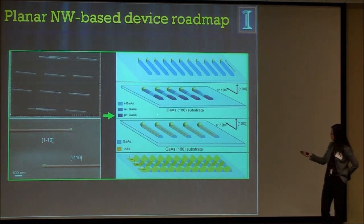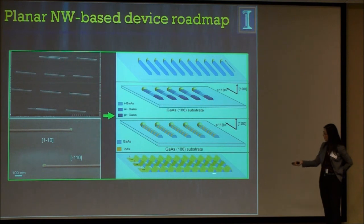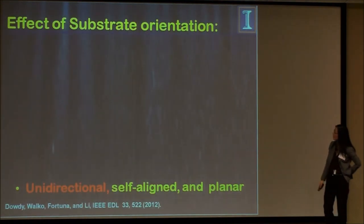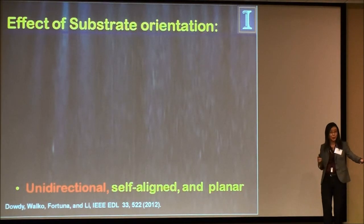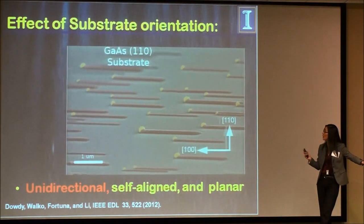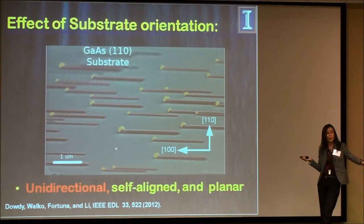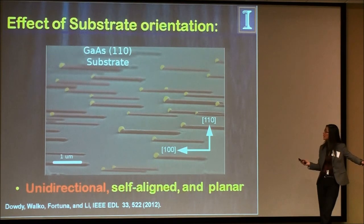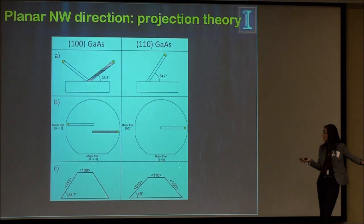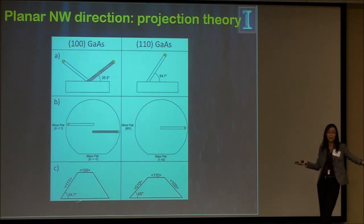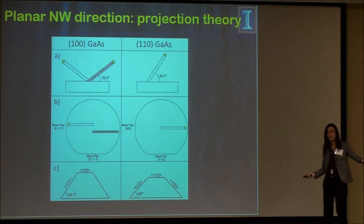Here's our roadmap. The first challenge is: can we do array-based transistors? If we go to a 110 substrate instead of 100, it turns out all the wires propagate in the same direction. We are able to realize unidirectional self-aligned planar wires. On a 100 substrate there are two ⟨111⟩B directions, and the planar wire is the planar projection of ⟨111⟩B — there are two of them. On a 110 substrate there is only one, so we get unidirectional wires.